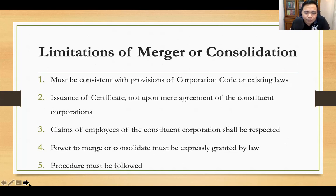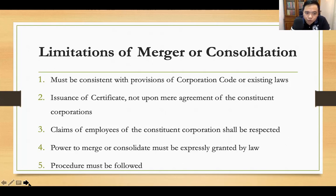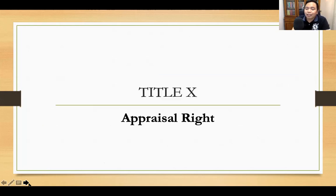Take note of item number five. These are the limitations of merger or consolidation, as flashed on your screen. It must be consistent with the Corporation Code, et cetera — these are self-explanatory. Now we go to Title 10, Appraisal Rights. This is the last topic for this episode.